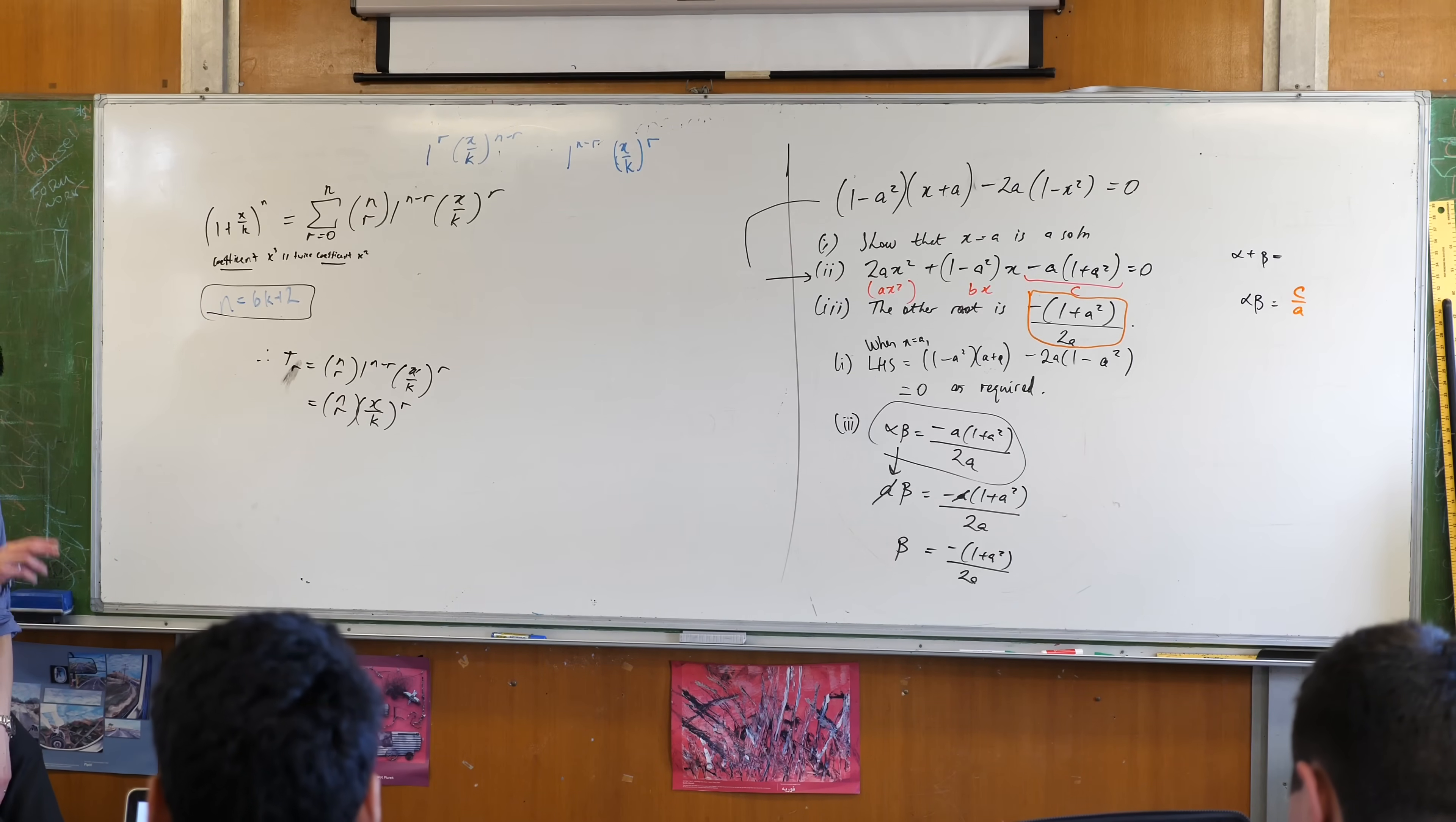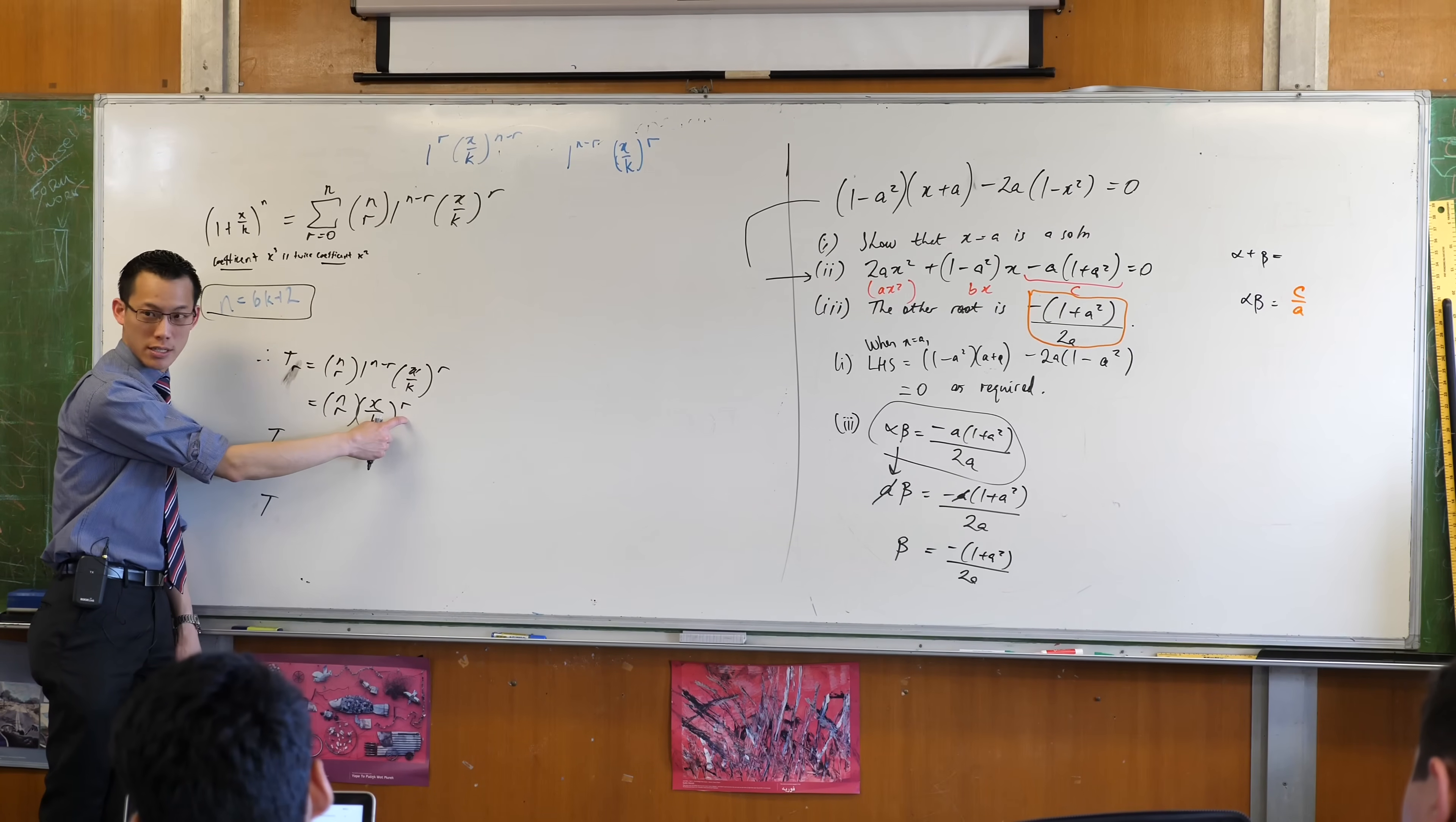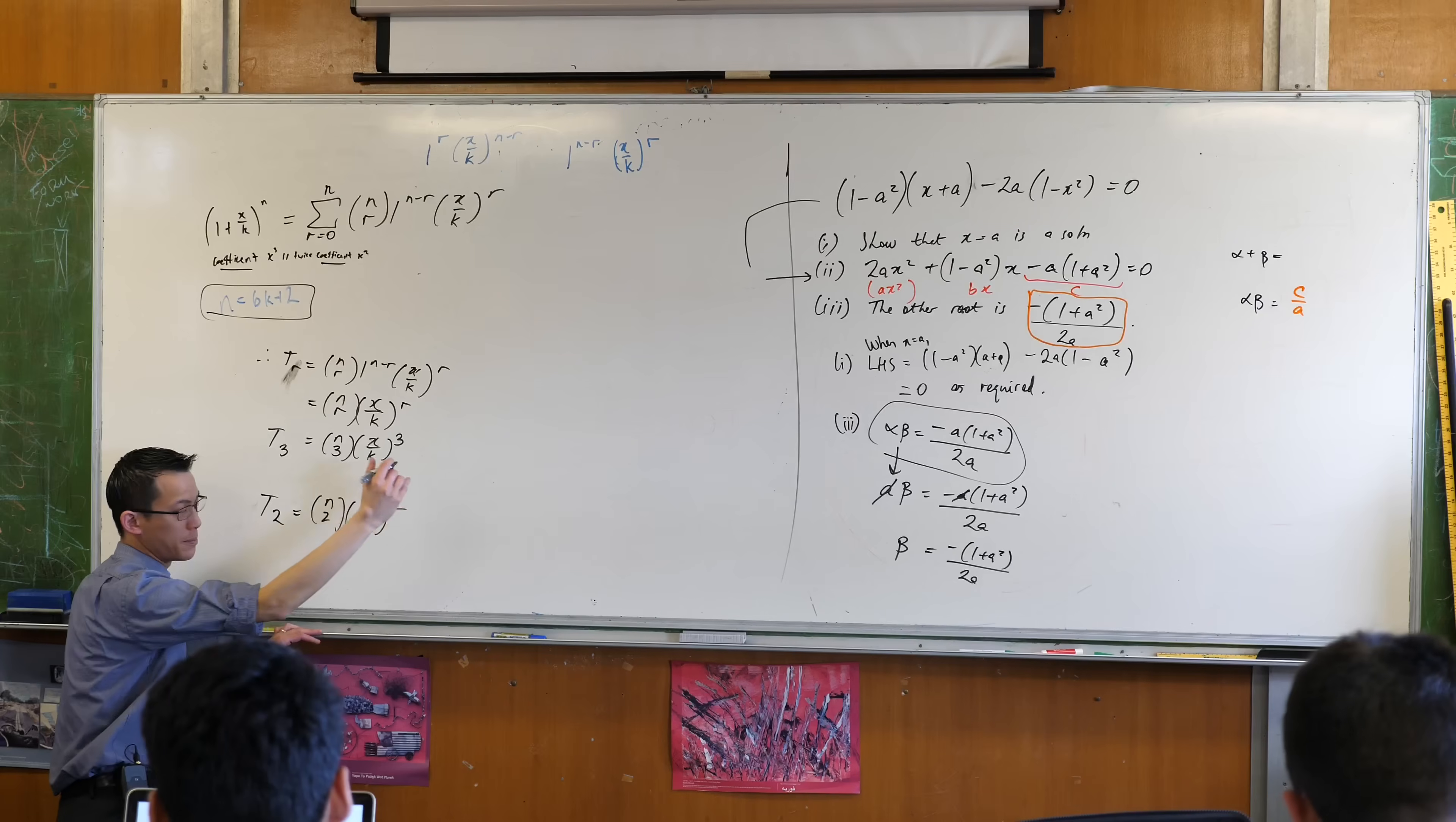Now let's have a look at this. This thing here tells us what every single term along will be and I want the X squared term and the X cubed term. Which ones are they going to be? Now have a look, if I try R equals 3, I'm going to have NC3, X on K to the power of 3. That'll be the X cubed term because that's the only X happening so you make that 3, you make this X cubed. I also want, so I'll write that down, term 3, NC3, X on K cubed. I also want the X squared term, so how am I going to do that? Term 2, NC2, X on K squared.